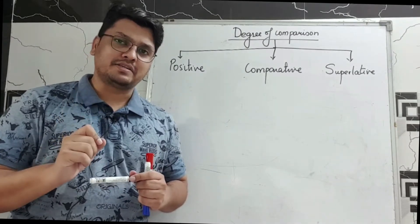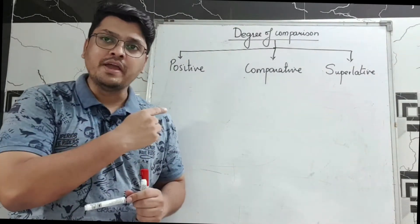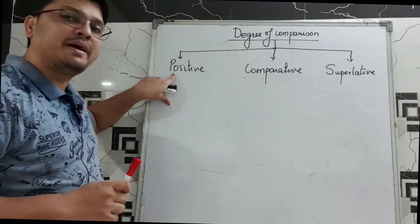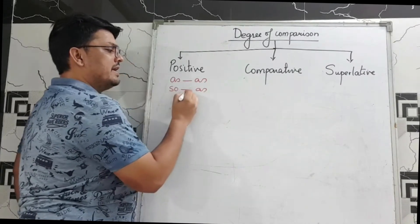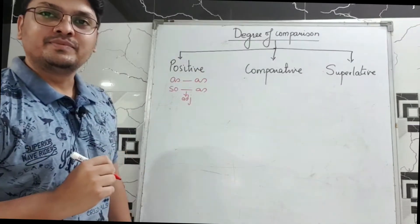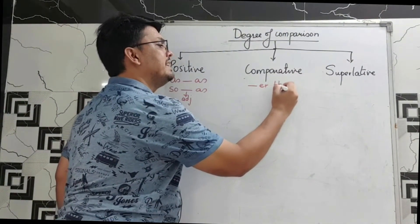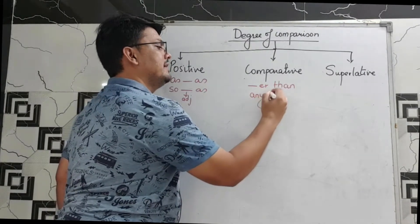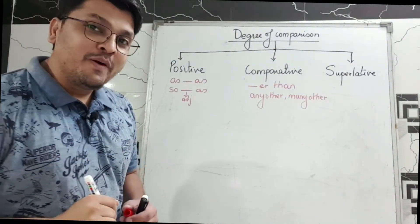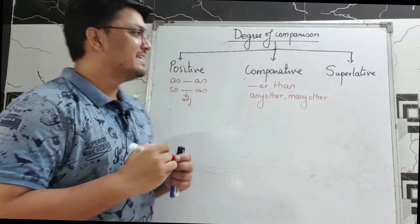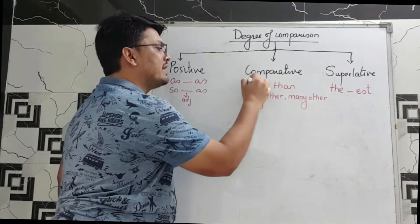Now, the most important part is how will you identify that the given sentence is in positive degree. To identify positive degree, you will see 'as...as' or 'so...as' with an adjective in the center. In comparative degree, you will see '-er than' or 'any other / many other.' To identify superlative degree, you will see 'the' followed by '-est' adjective.